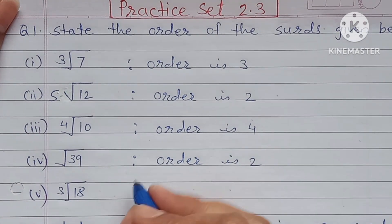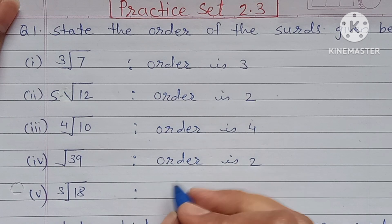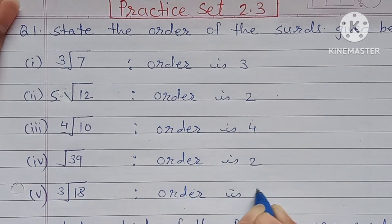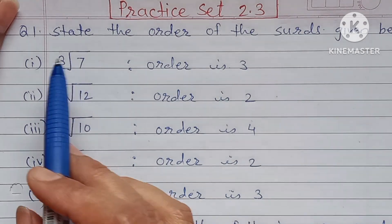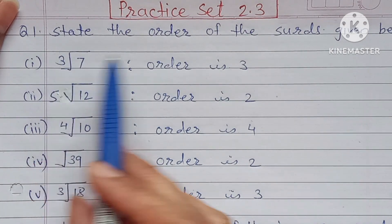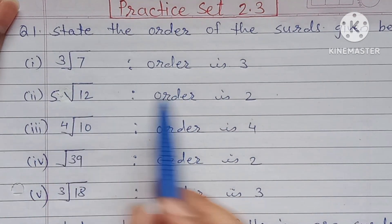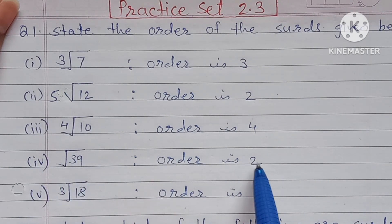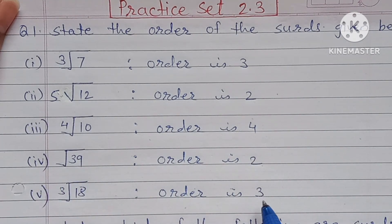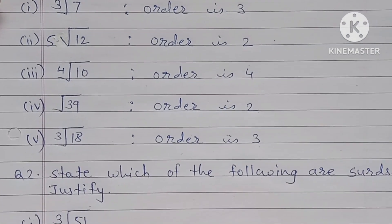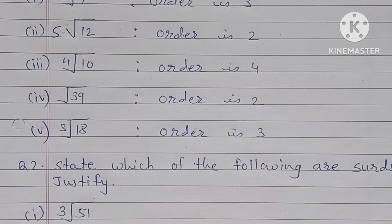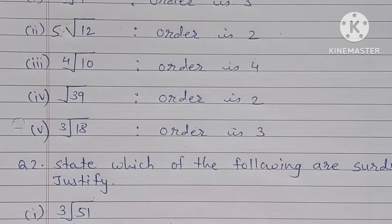Cube root of 18 — cube means order is 3, so order is 3. Now, question number 2: State which of the following are surds and justify.